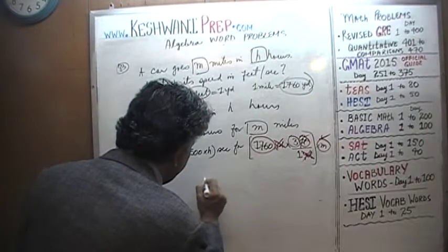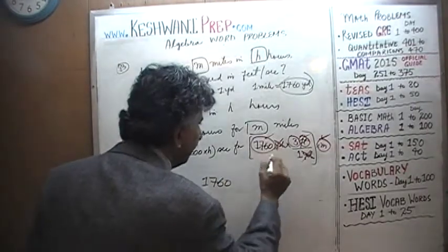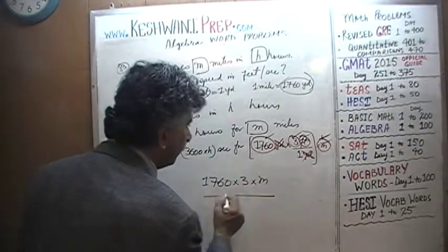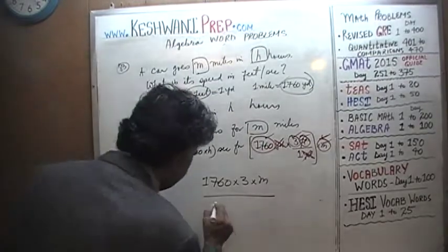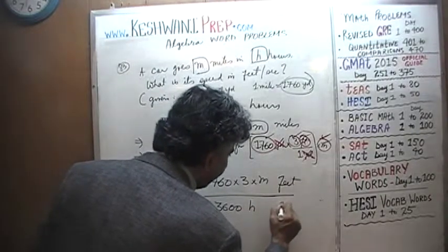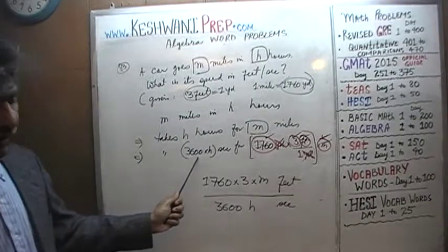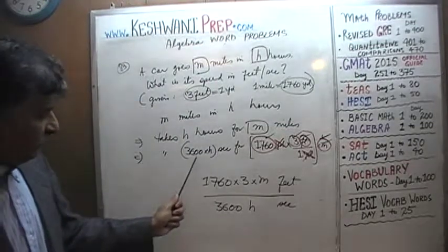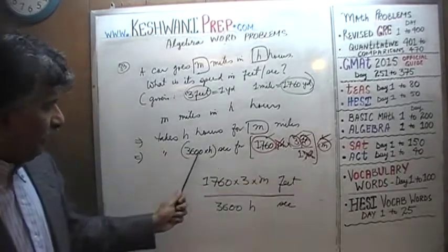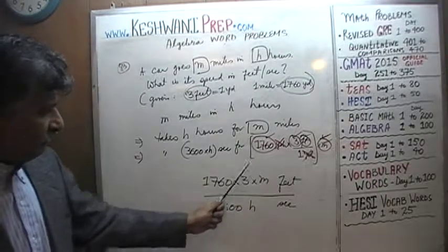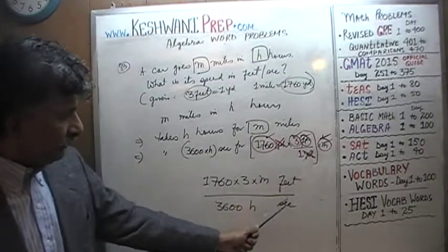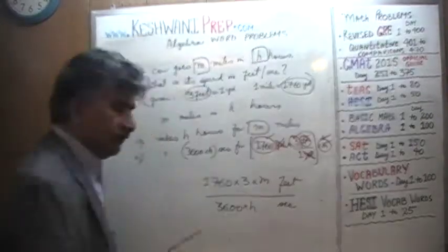So we end up with 1760 times 3 times m over 3600 times h. This is our feet and this is our seconds. If we are taking 3600h seconds to go this many feet, then in one second we should be able to go 1760 times 3 times m over 3600 times h feet per second. Let's simplify.